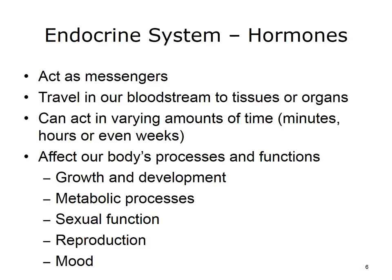Hormones are natural chemicals produced and released by the endocrine glands, thought of as our body's chemical messengers. The eight endocrine glands secrete hormones into the bloodstream, where these chemical messengers go to various organs and tissues to generate a specific reaction. The presence of hormones results in changes such as growth and development. Hormones can act in minutes, hours, or even weeks, and they affect metabolic processes, digestion, blood pressure regulation, reproduction and sexual function, and even our moods.